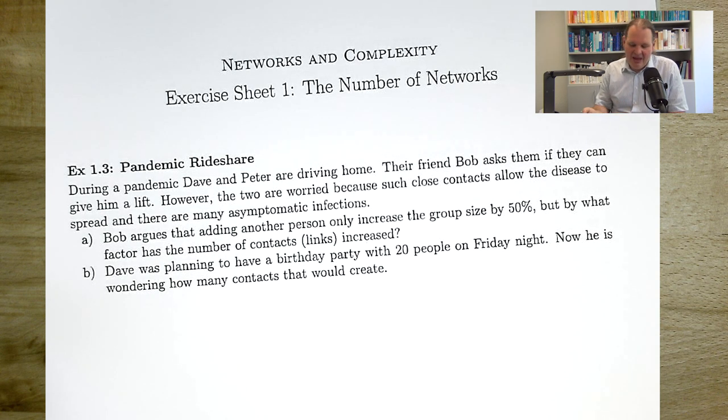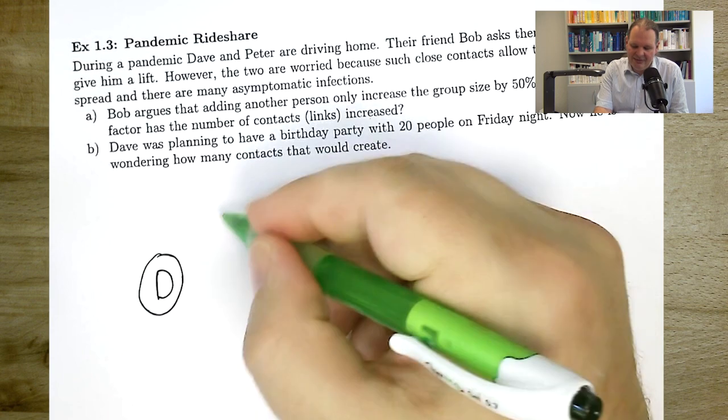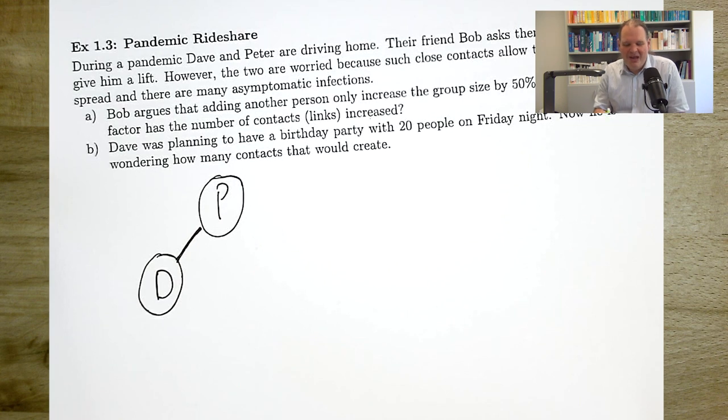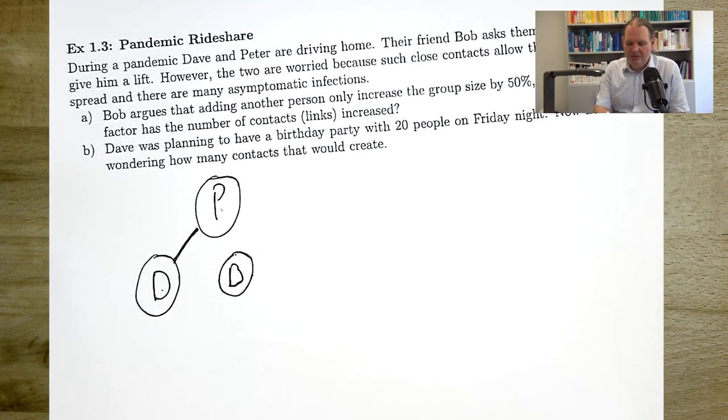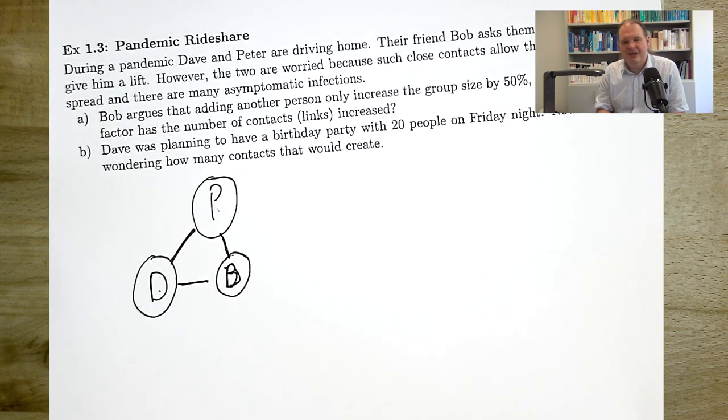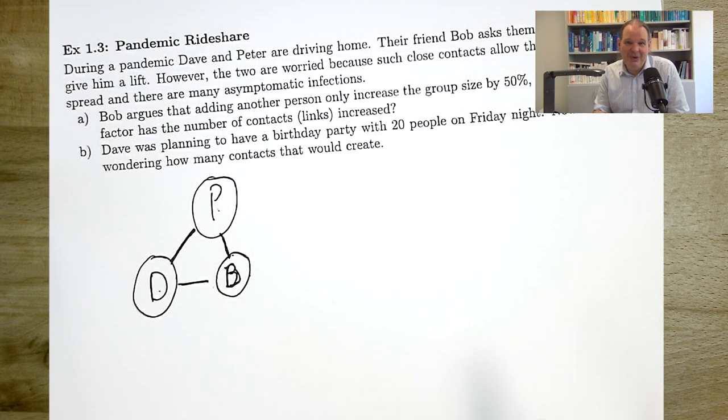So now, let's do it together. And this we can just do by drawing, right? If there is Dave and Peter in the car, that creates kind of one link in our potential spreading network. And you might want to count this as two contacts, right? Dave has one contact and Peter has one contact. Now if we add Bob to the mix here, let me make it a bit more Bob here. So if we add Bob to the mix, that gets us two more links. So the number of links increases from one to three. So that is a 200% increase. And the number of contacts, well, that's double counting the links, right? Increases from two to six. Of course, also a 200% increase.